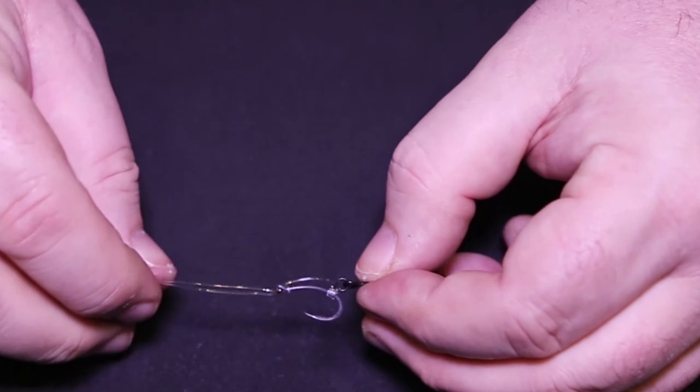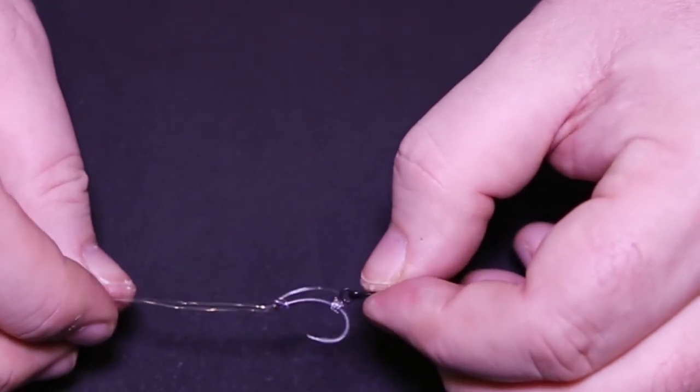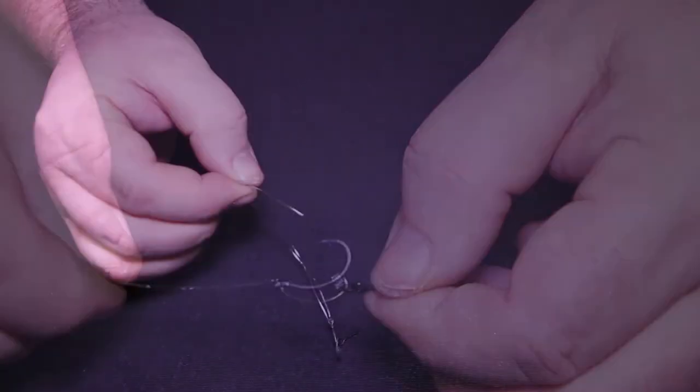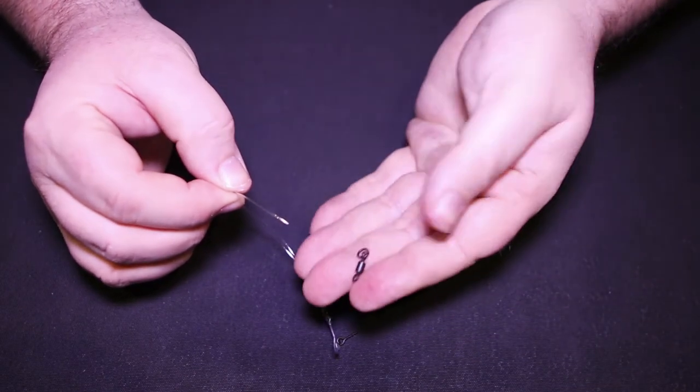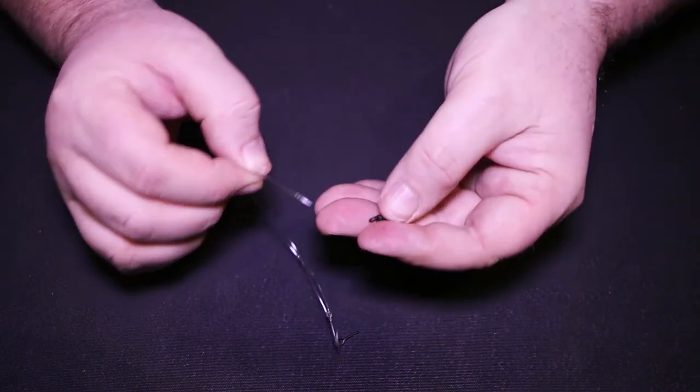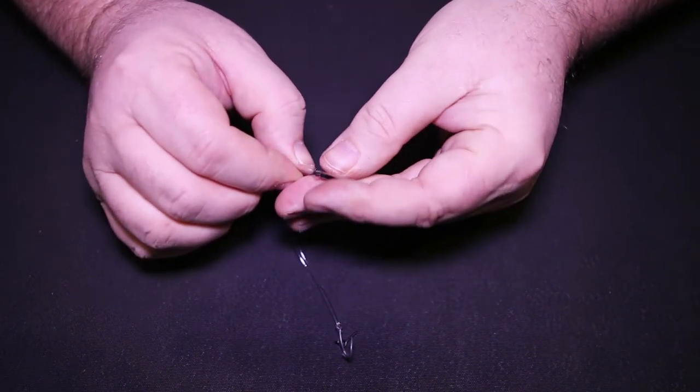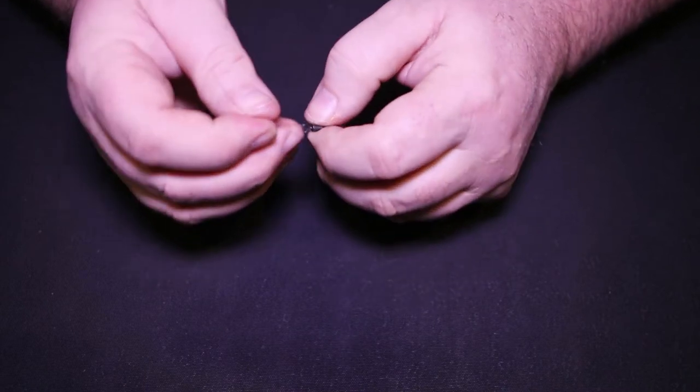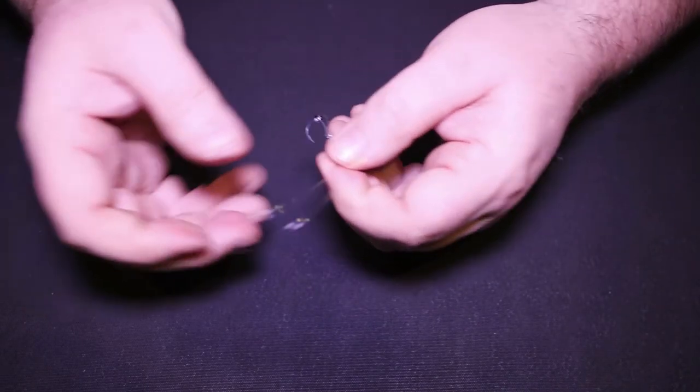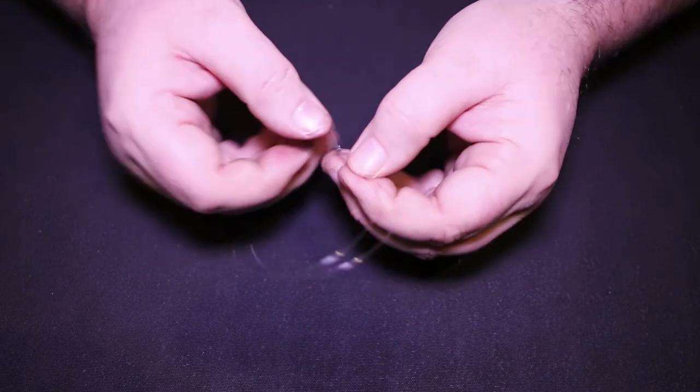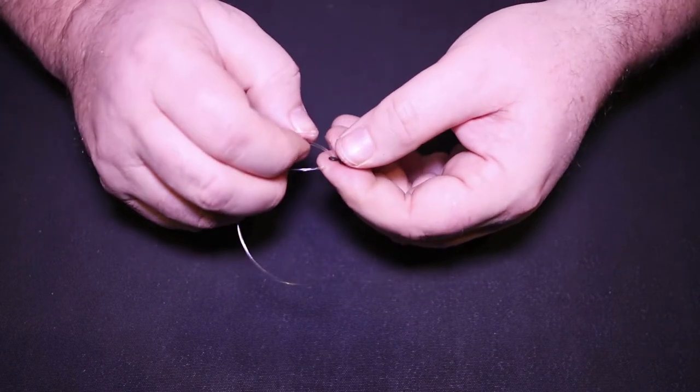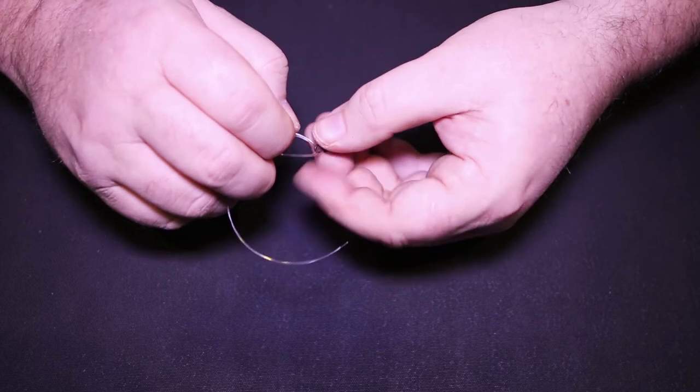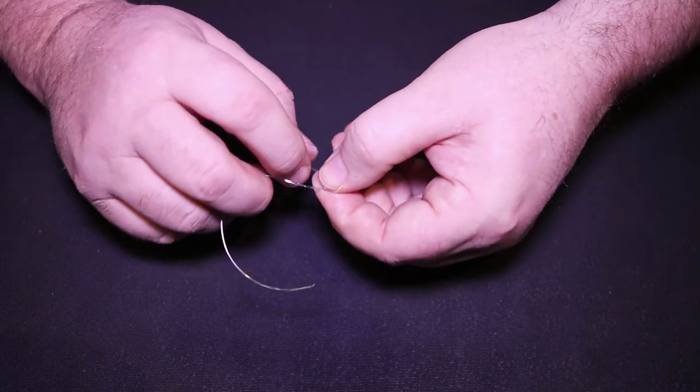It will start to take shape now. Get a ring swivel. That's an interesting knot, this one—very simple, but it's very important that you realize that when you pull this tight, you are going to be gaining another centimeter.